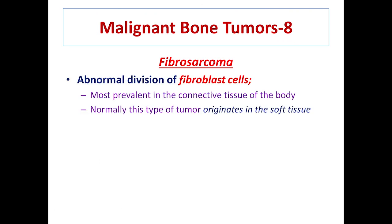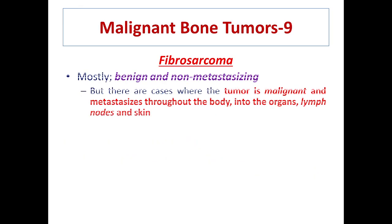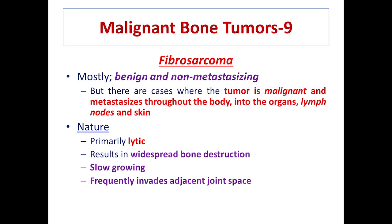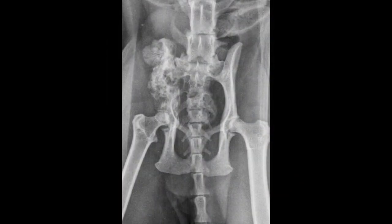Fibrosarcoma is an abnormal proliferation of fibroblast cells that normally originates in soft tissues, but in rare cases may originate in bone, weaken the bone structure, and may cause pathological fracture. Fibrosarcomas are mostly benign and non-metastasizing, but in rare cases the tumor is malignant and metastasizes to organs, lymph nodes, and skin. It is primarily lytic in nature, resulting in widespread bone destruction; it is slow growing and frequently invades the adjacent joint space. In these radiographs you can see lytic changes in the affected bone and in the ileum.